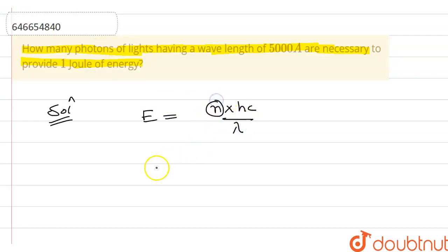We have to find the number of photons, so n equals E times lambda divided by hc.